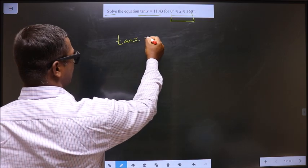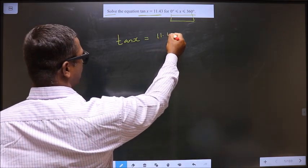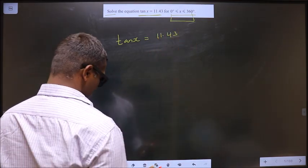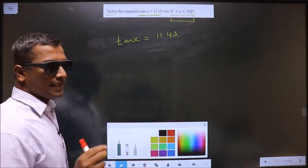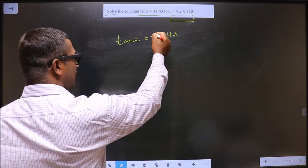Given equation is tan x equal to 11.43. First you should check the sign. Here it is positive.